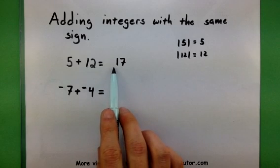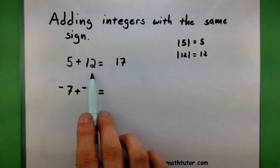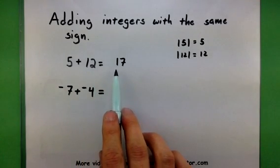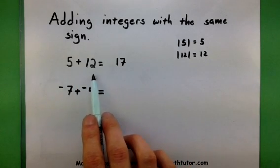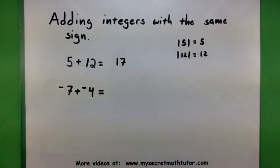Next, I want to make sure the sign is the same as the original numbers. So here I'm going to use a positive 17, because both my 5 and my 12 are positive. So in this case, my final answer is a positive 17. Not so bad.